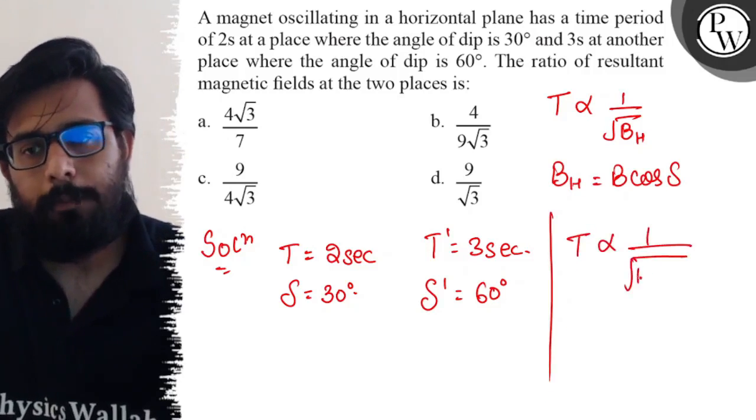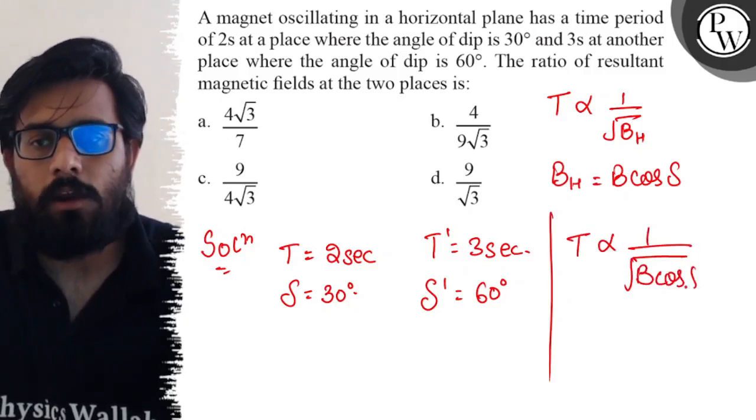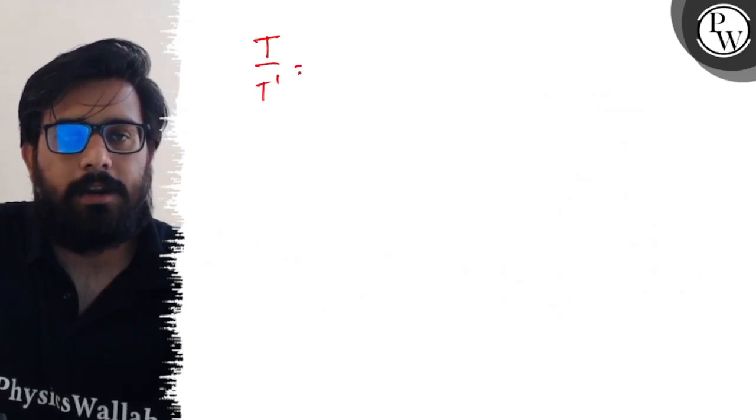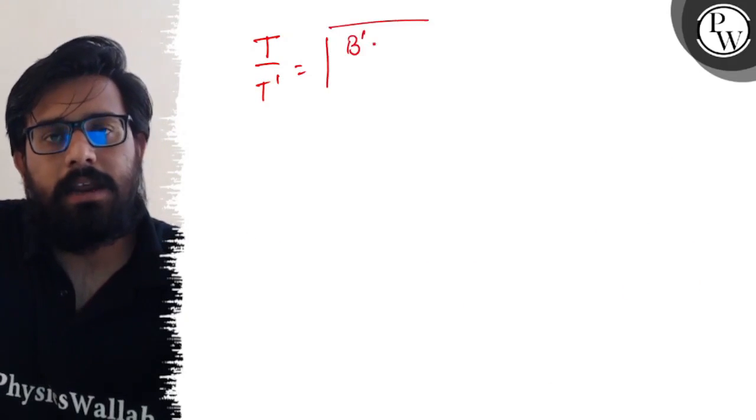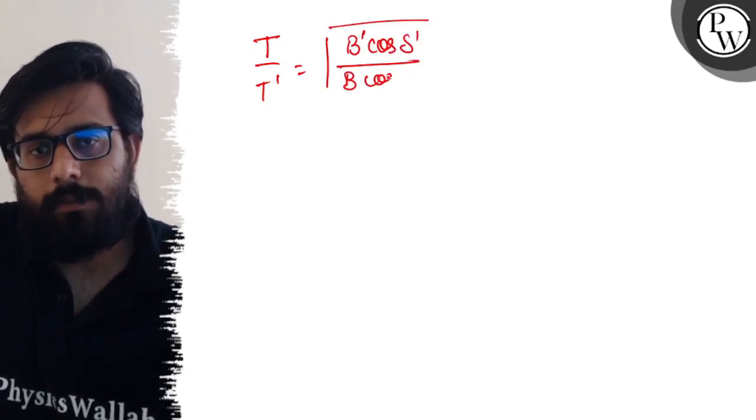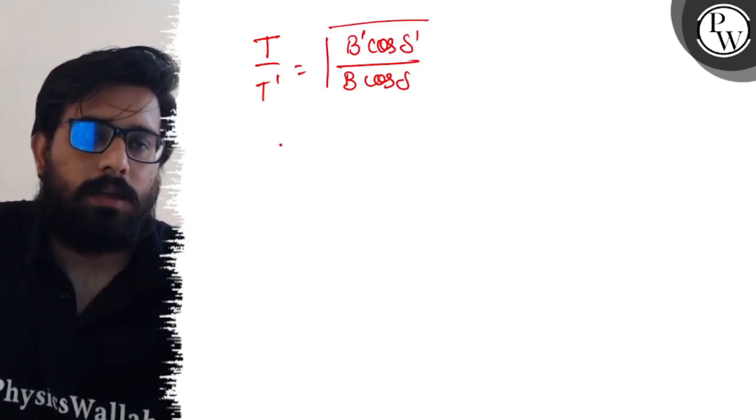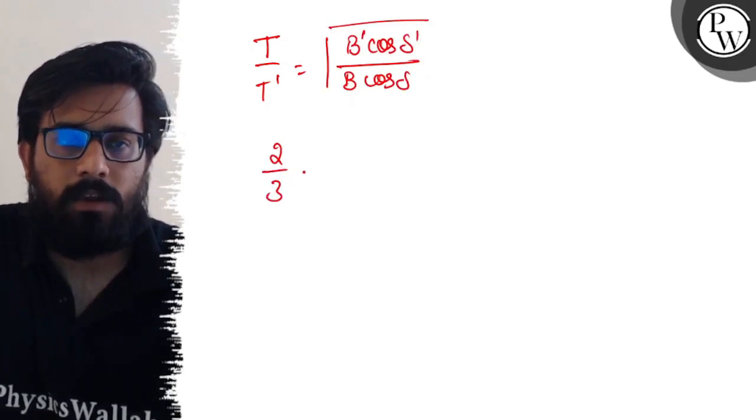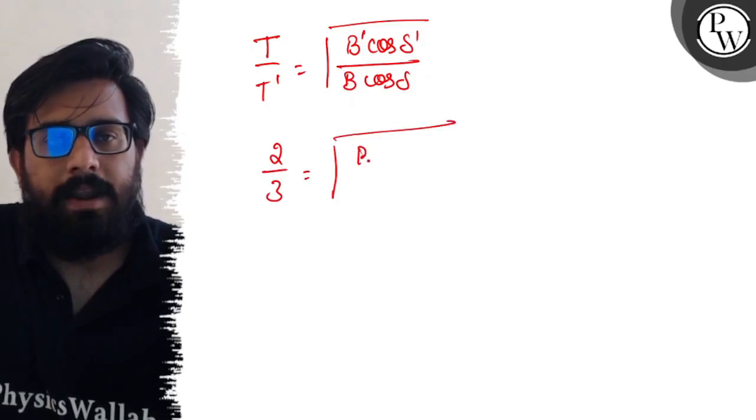T/T' can be written as √(B' cos δ')/(B cos δ). So time period is 2 seconds, T' is 3 seconds, √(B'/B) cos δ' is 60 degrees, so it comes out to be cos 60.